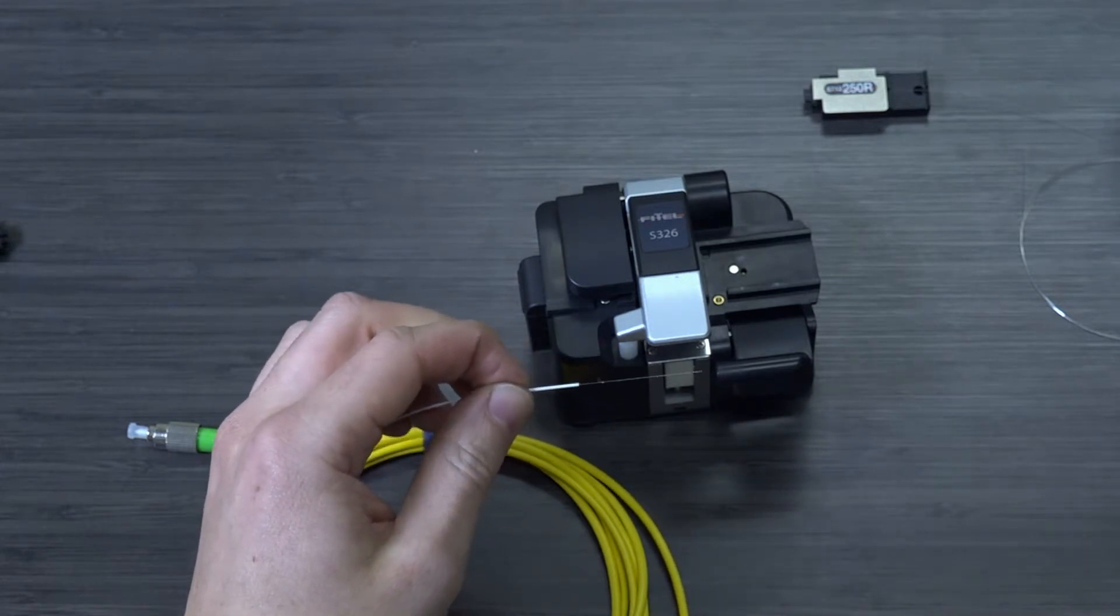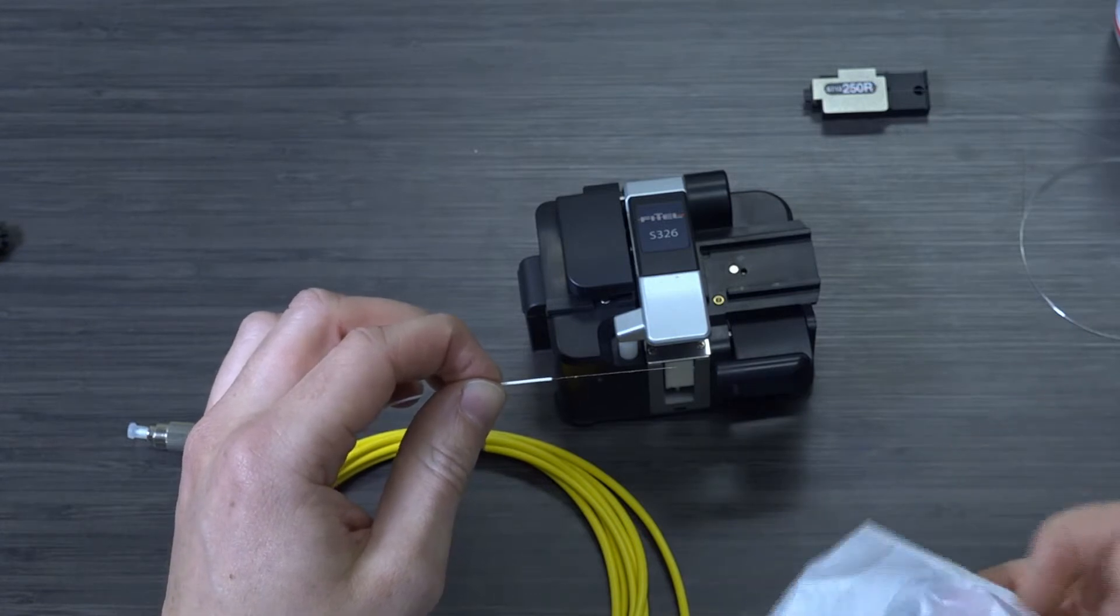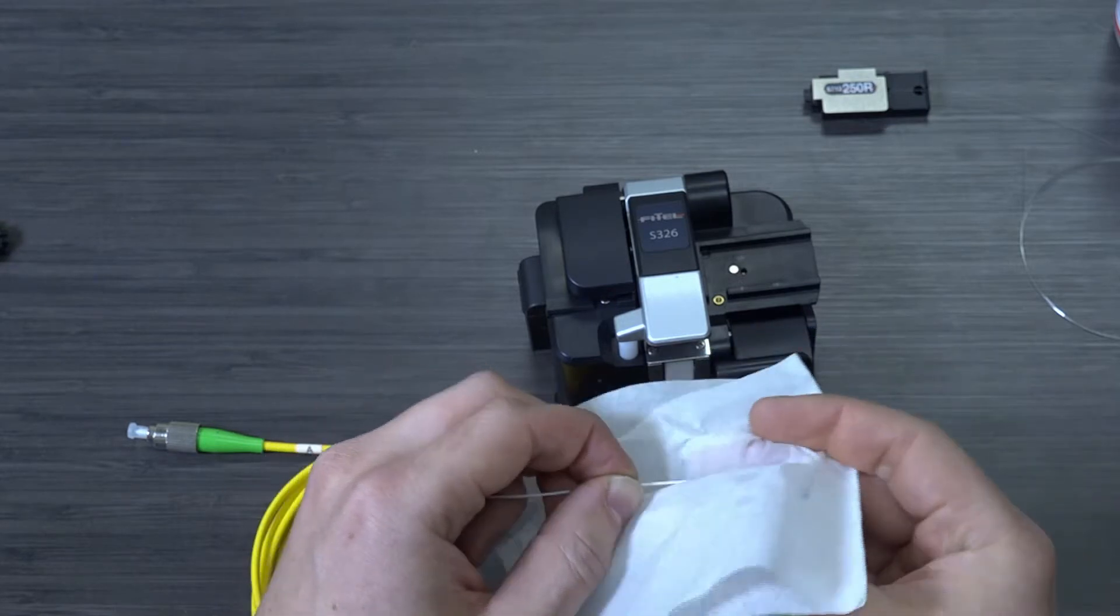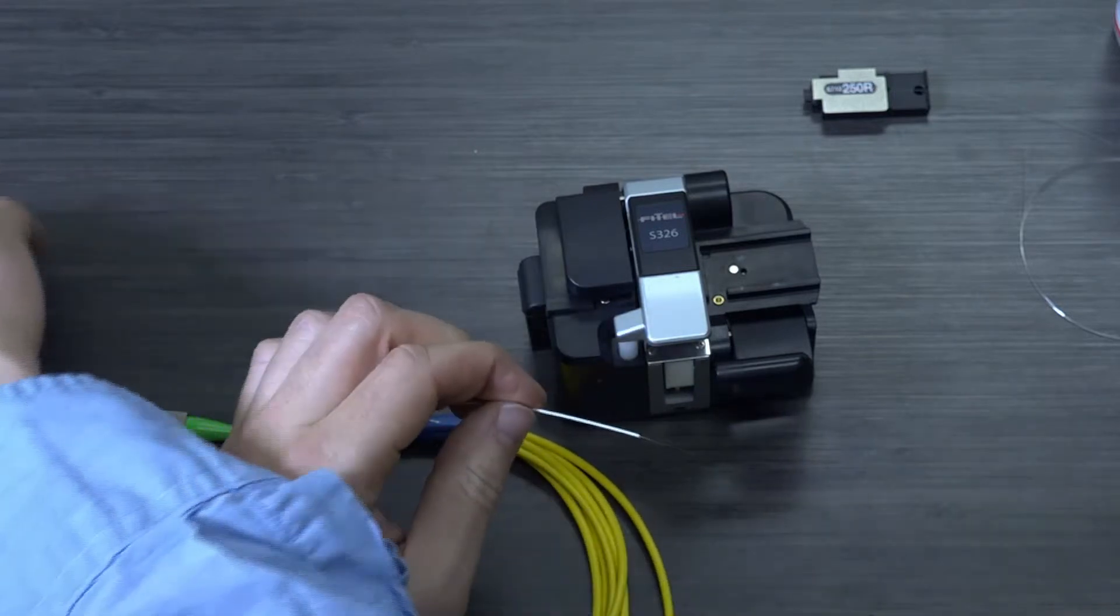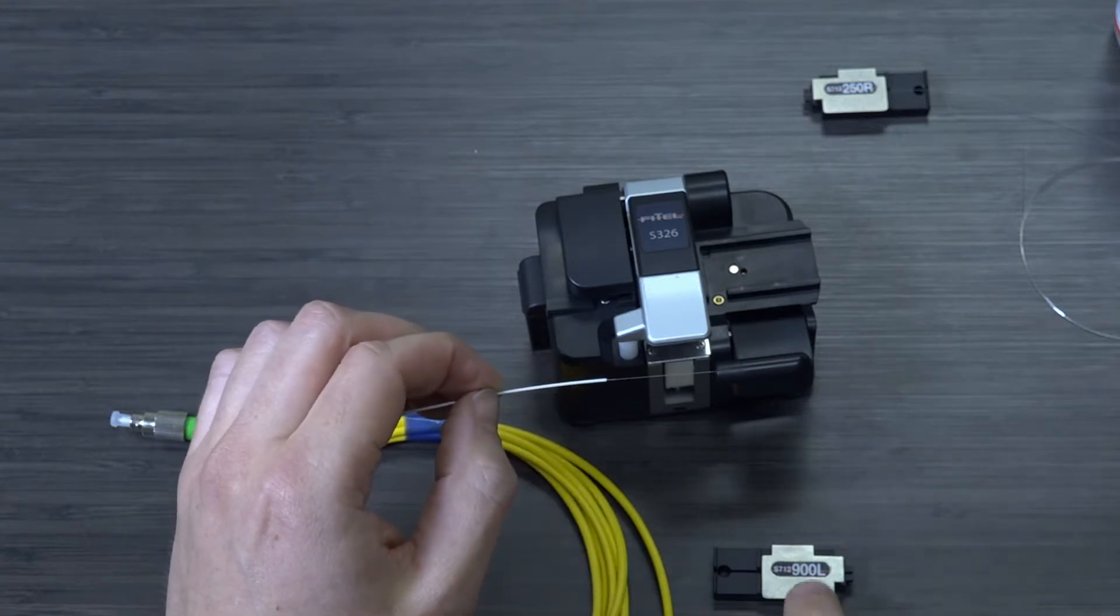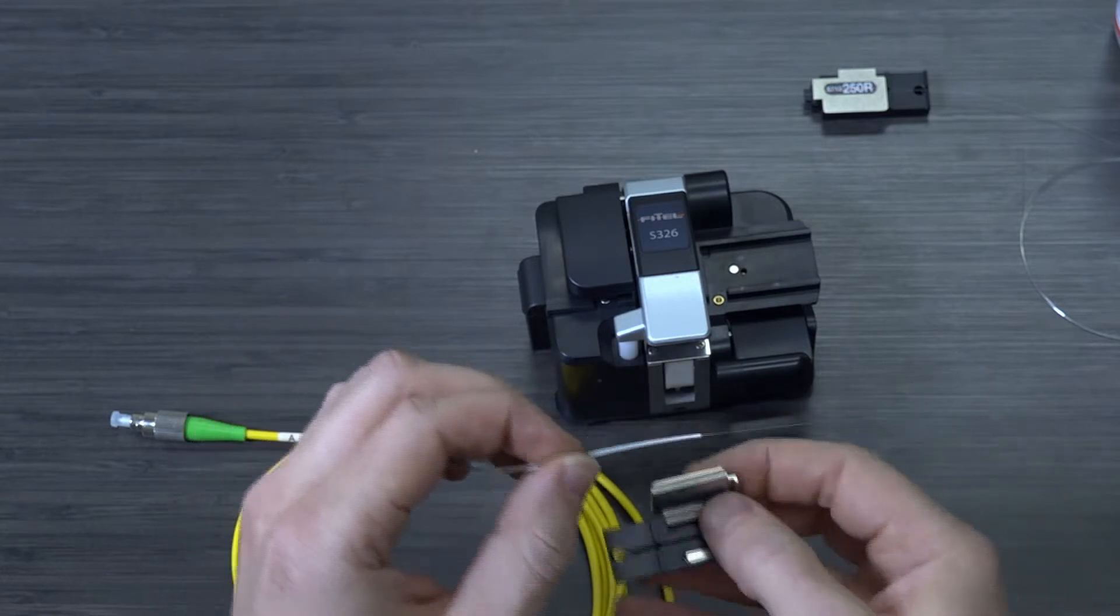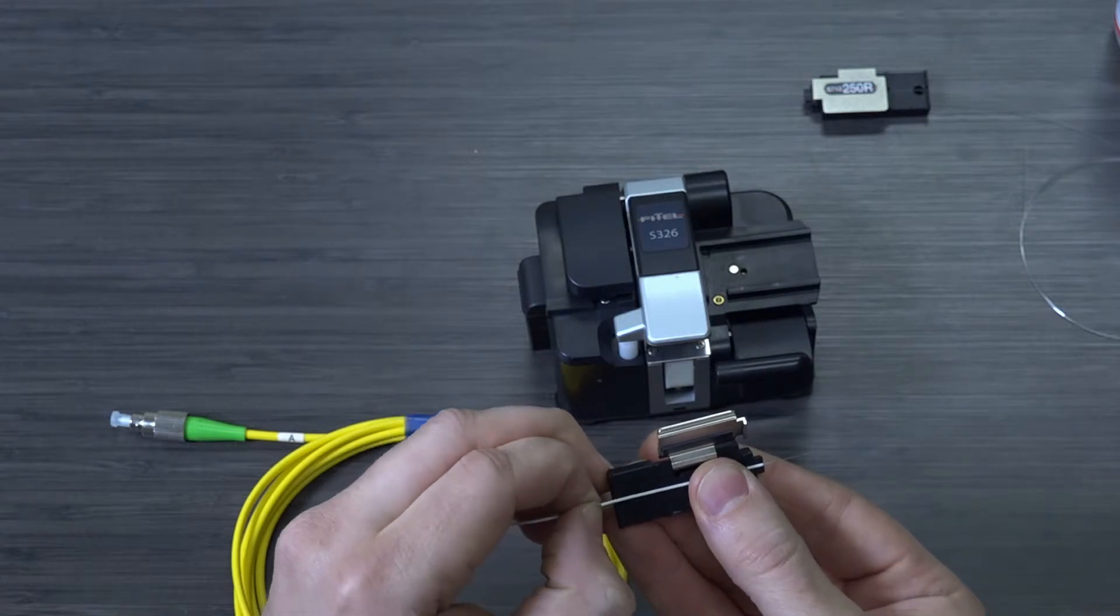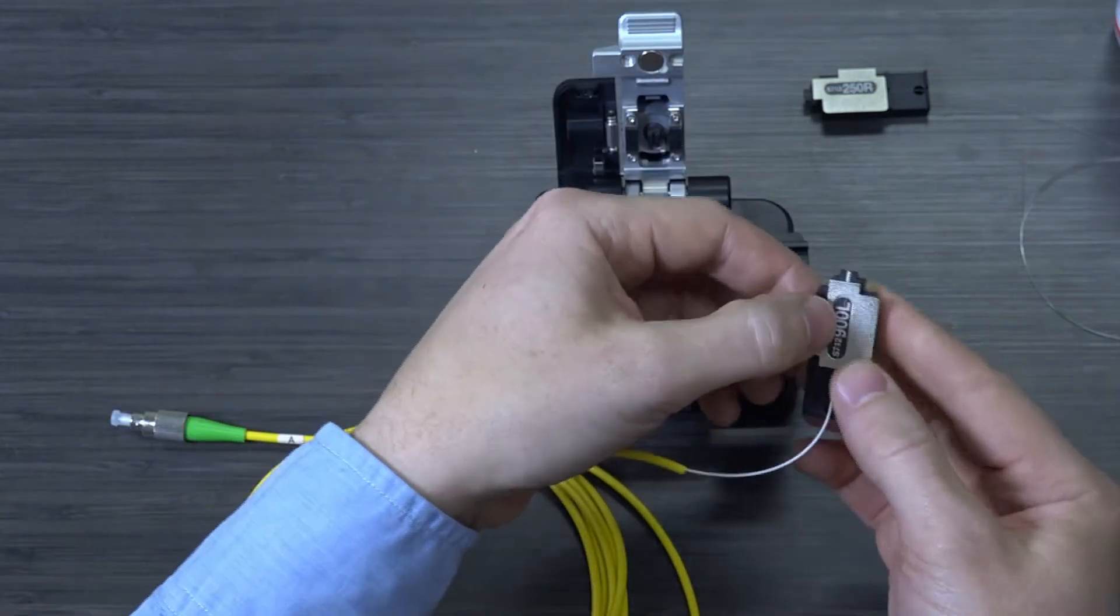Just like the previous fiber, the next step is to clean. So I'm going to use a little bit of isopropyl alcohol and a lint-free wipe. And then again we use our fiber holders. However in this case because we're going to be holding on to this part of the fiber, which is 900 microns, we are using the 900L fiber holders. And from here on out it is the same procedure as previously performed.